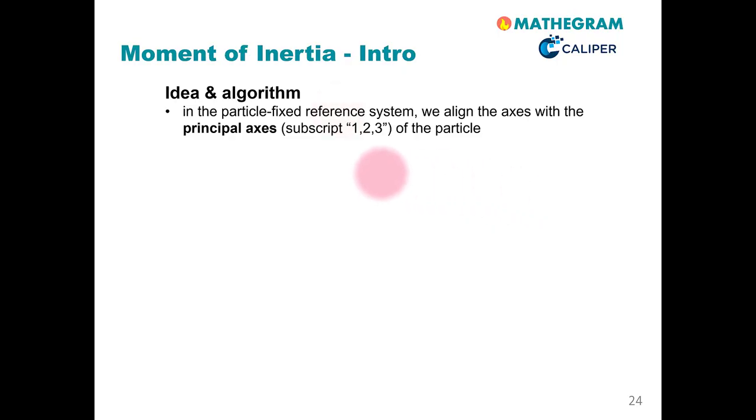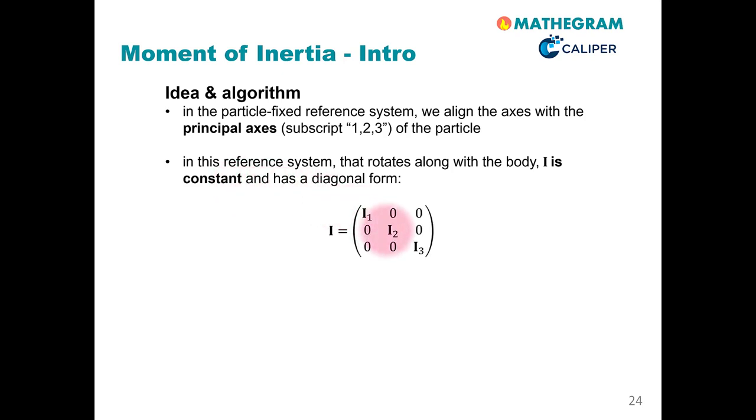The reason for such a choice of the particle-fixed reference system is that the moment of inertia in this reference system is constant and has a diagonal form. We just need three values, i1, i2 and i3, to characterize the moment of inertia of the particle.